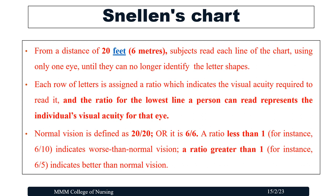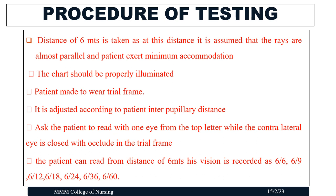Normal vision is defined as 20/20 or 6/6. A ratio less than one indicates worse than normal vision, and a ratio greater than one indicates better than normal vision. For example, if the patient's visual acuity is marked as 20/40, it means that patient can read a line at 20 feet that a person with normal vision can read at 40 feet.